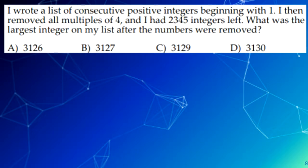Because 2,345 divided by 3 is 781 with a remainder of 2, there are 781 multiples of 4 that were removed. And since the remainder was 2, the last number in the list was 4 times 781 plus 2. So our answer would be A.